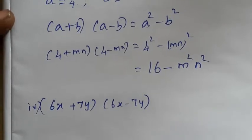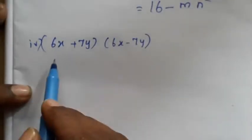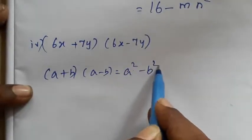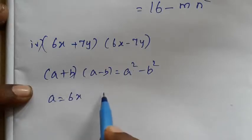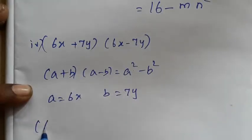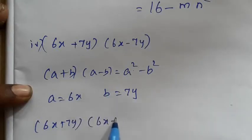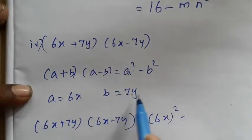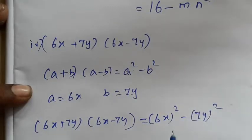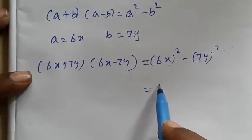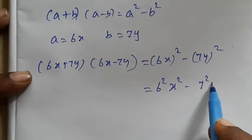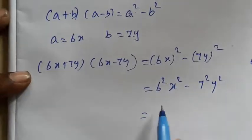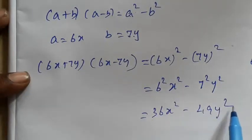Next example: 6x plus 7y and 6x minus 7y. Using A plus B, A minus B equals A squared minus B squared, A is 6x and B is 7y. So we get 6x whole squared minus 7y whole squared. 6 squared is 36, so it equals 36x squared minus 49y squared.